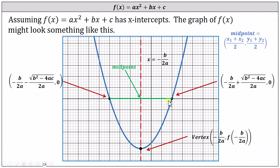If we find the midpoint of this green segment whose endpoints are the x-intercepts, it gives us the x-coordinate of the vertex as well as the equation of the axis of symmetry. Recall that to find the midpoint of two ordered pairs, we add the two x-coordinates and divide by 2. To find the x-coordinate of the vertex, we only need the x-coordinate of the midpoint. Let's calculate this on the next slide.